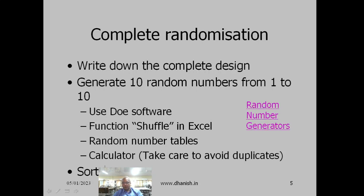After generating random numbers, sort them to make the actual observation table. We should use random number generators because several studies have shown that if you write manually, there is always some bias. We always have a tendency to favor certain numbers. To avoid such bias, use random number generators — software, drawing lots, or a dice are all acceptable.